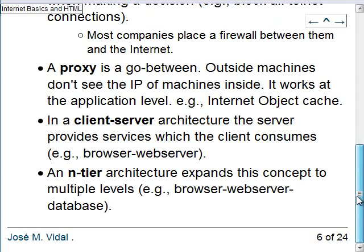Client-server architecture is a high-level concept: you have a server that provides information and clients that use it. This extends to N-tier architectures. In web applications, we usually have a three-tier architecture: the web client or browser, the web server, and an SQL database. The browser accesses the server, the server accesses the SQL database, and then you go back.